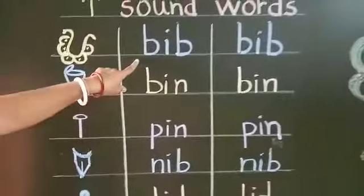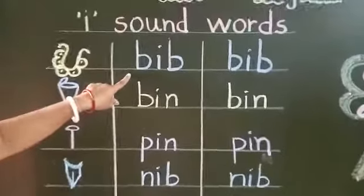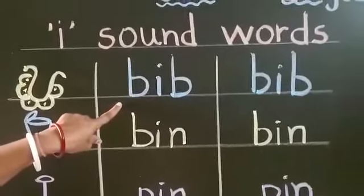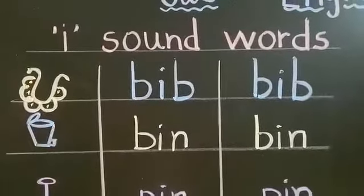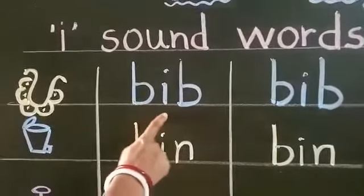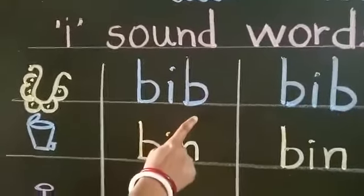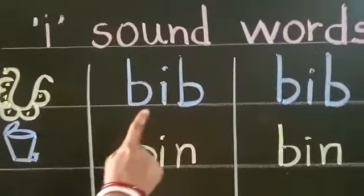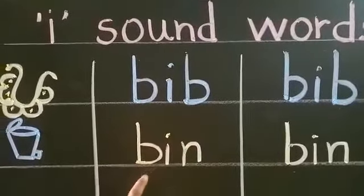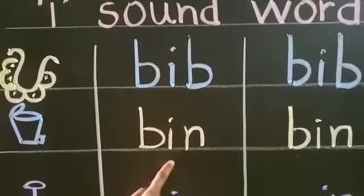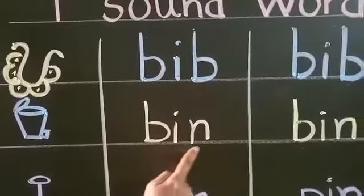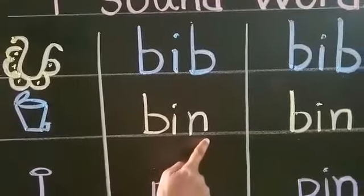Now here we will read 3-letter words with I sound. B-I-B. Again B-E-B. Bib. B-I-N, B-E-N. Bin.